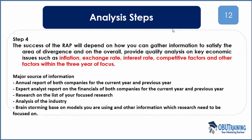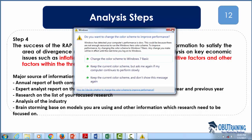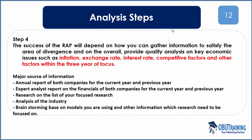The success of the RAP depends on how you can gather information to satisfy the areas of divergence and provide quality analysis on key economic issues. The examiner will look at your entire RAP to ensure it encompasses key economic issues affecting the industry and players within it — inflation affecting any manufacturing company, exchange rate if they import raw materials, interest rate, and competitive factors. All these factors must show in your analysis.